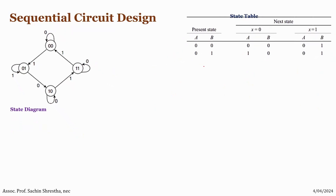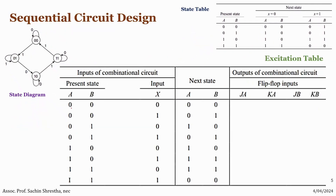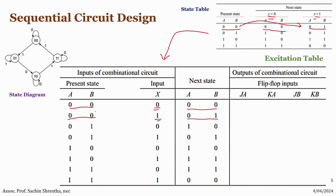Now let's rewrite these inputs in a single consolidated line. For X equal to zero: states go 00→00, 01→10, 10→10, 11→11. For X equal to one: states go 00→01, 01→01, 10→11, 11→00. This form is easier to analyze, especially when defining the excitation table.